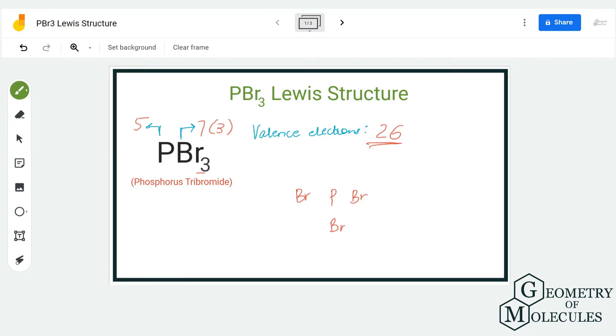Now that you know the number of valence electrons, it becomes easier to arrange electrons and see the bond formation. Here, as there are three bromine atoms and one phosphorus atom, the phosphorus atom will take the central position because it is less electronegative than the bromine atom.